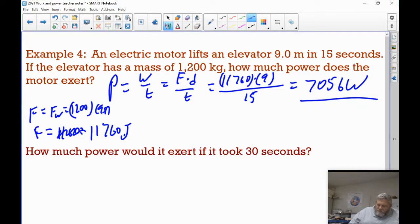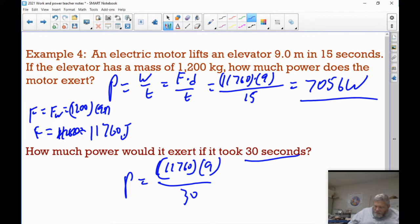So, what would the power be if it took 30 seconds? Well, it would be twice as long. So, we would just take the top number. We'd do 11,760 times 9 and divide by 30 instead. Basically, we're doubling what's in the bottom, so we should cut this in half. And that would give us 3,528 watts.